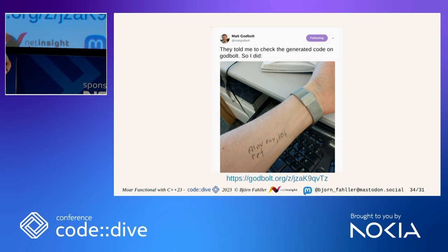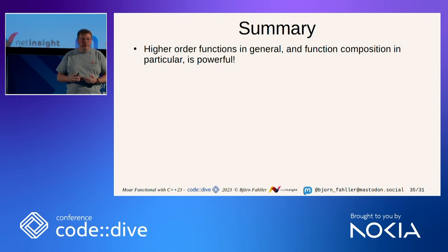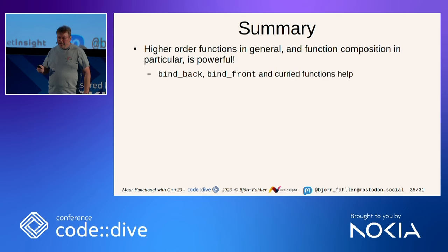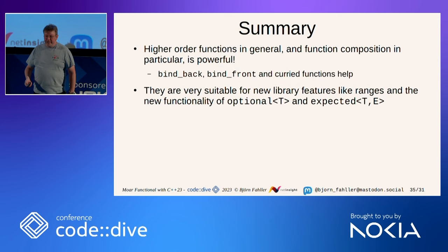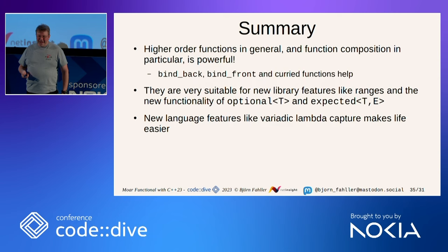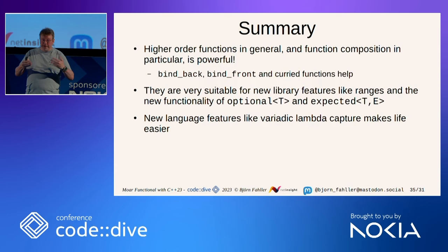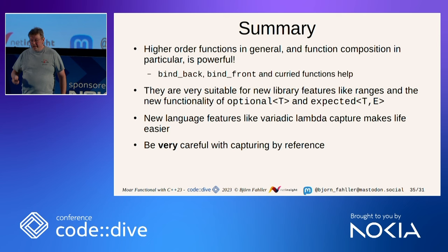To summarize: higher-order functions in general, and functional composition in particular, is extremely powerful — you can mix and match things as you like. `bind_back`, `bind_front`, and curried functions help a lot. They are very suitable with new library features like ranges, `optional<T>`, and `expected<T,E>` — expected is like optional, but you get an excuse when you don't have a value. New language features like variadic lambda capture and explicit object parameter really make life easier. Be very careful with capturing by reference. And the explicit object parameter is a new superpower — read about it in Sy Brand's blog post.